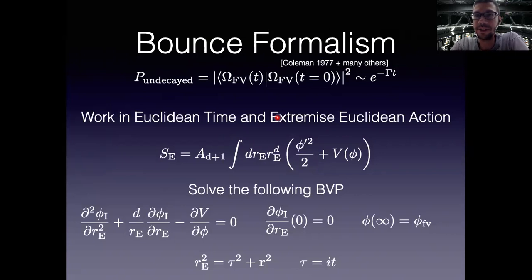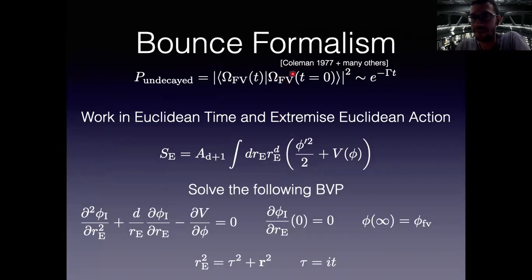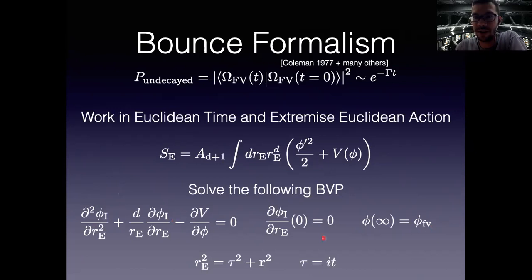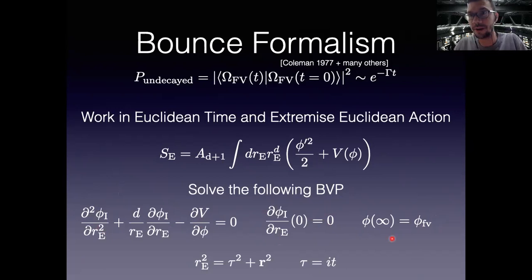This formalism computes the vacuum-to-vacuum transition amplitude squared, which decays as e to the minus gamma t, where gamma is the decay rate. To compute gamma, you go to Euclidean time — removing all time dependence — and extremize the Euclidean action. This amounts to solving a boundary value problem: the equation of motion with a smoothness condition at the origin and a boundary condition at infinity ensuring you started in the false vacuum.